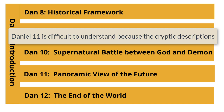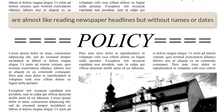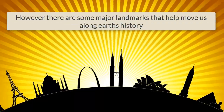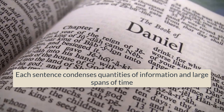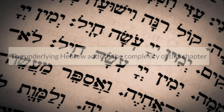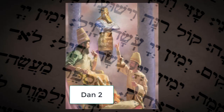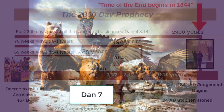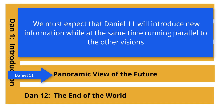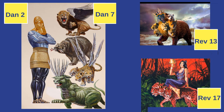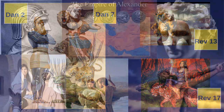Daniel 11 is difficult to understand because the cryptic descriptions are almost like reading newspaper headlines but without names or dates. However, there are some major landmarks that help move us along Earth's history. Daniel 11 starts out describing literal historic events. Each sentence condenses quantities of information and large spans of time. In addition, many metaphors are used. The underlying Hebrew adds to the complexity of this chapter. Keep in mind that the prophecies of Daniel 2, 7, and 8-12 are not only parallel but they also augment each other. We must expect that Daniel 11 will introduce new information while at the same time running parallel to the other visions. In fact, the visions of Daniel run parallel to the visions in Revelation, but the visions in Revelation provide much more detail as concerns the time of the end.